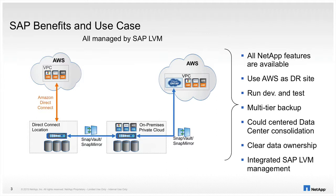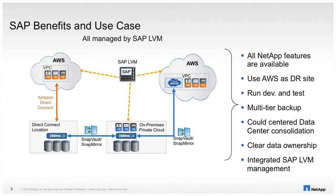With this solution, many use cases are possible and attractive for SAP customers. Think of using the AWS site as a disaster recovery site, or for running test and training systems using on-demand compute resources. The question is how to control and manage this hybrid environment. This is where SAP LVM fits in quite nicely. LVM can control not only subsystems on-premise but also subsystems running in the cloud. With the LVM Storage Adapter and NetApp Storage Services Connector, SSC, SAP LVM can directly manage all NetApp controllers — local, remote, or even virtual.